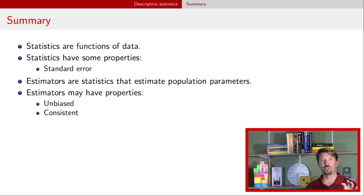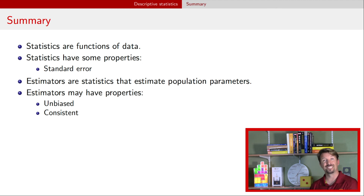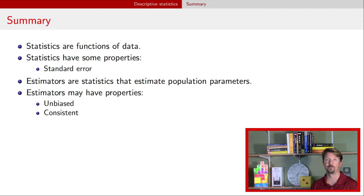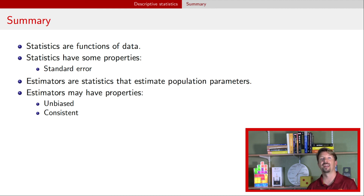So through the last three videos, we talked about the field of statistics and what a statistic actually is. We talked about statistics having a property called a standard error, and statistics sometimes being estimators of population parameters. When they are, we can talk about whether they have the properties of being unbiased and being consistent. The next video in this series will talk about graphical statistics briefly, and I hope to catch you there.